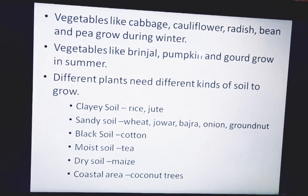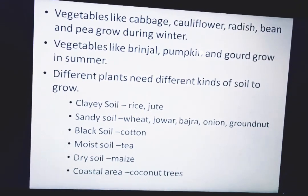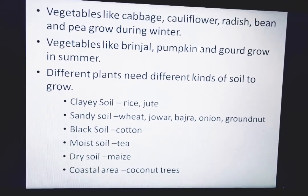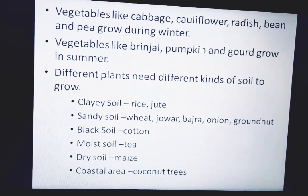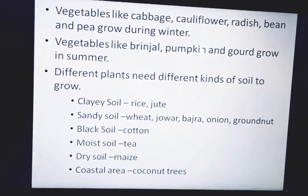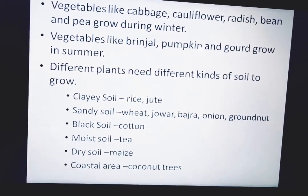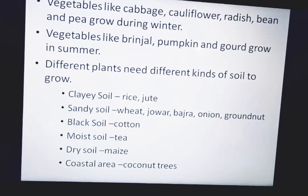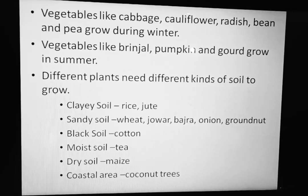Vegetables like cabbage, cauliflower, radish, bean, and pea grow during winters. Vegetables like brinjal, pumpkin, and gourd grow in the summer. Different plants need different kinds of soil: rice and jute grow in clay soil; wheat, jowar, bajra, onion, and groundnut grow in sandy soil; cotton grows in black soil; tea plants need moist soil; maize grows in dry soil; and coconut trees grow near coastal areas.